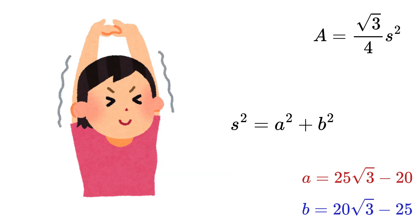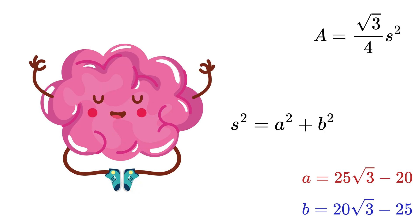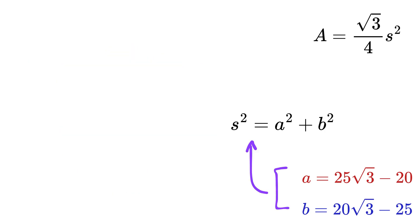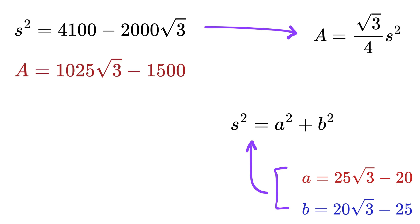Now, I'm feeling lazy to show all the calculations because the main brainstorming part is already done, and now we just have to substitute values. We get s² as this, and finally, area as this. My mind is really blown away right now.